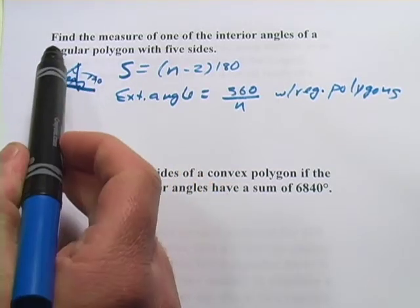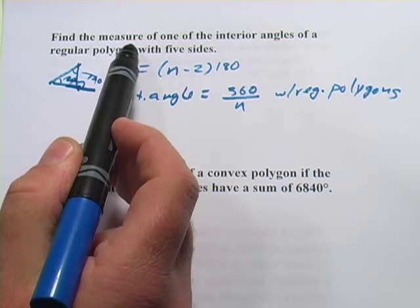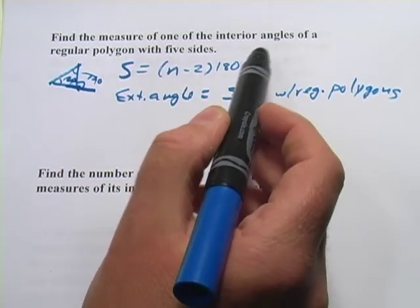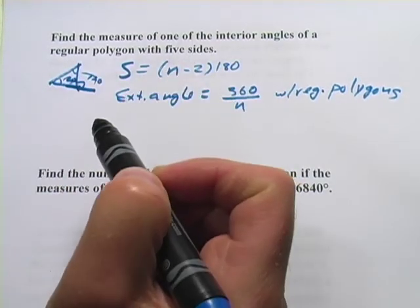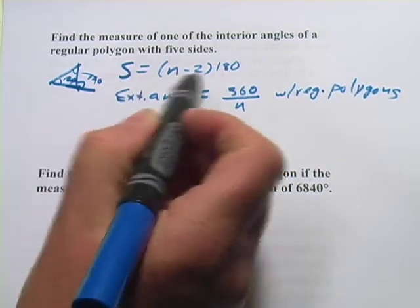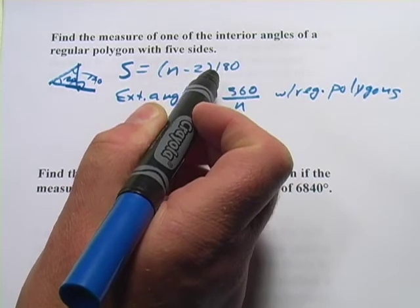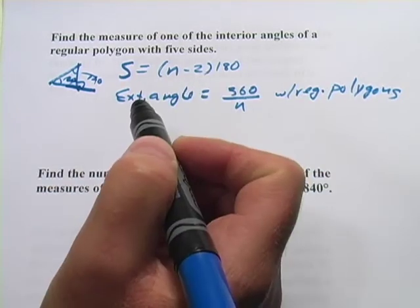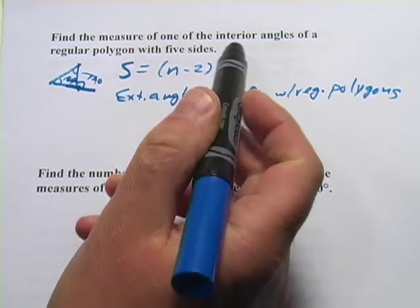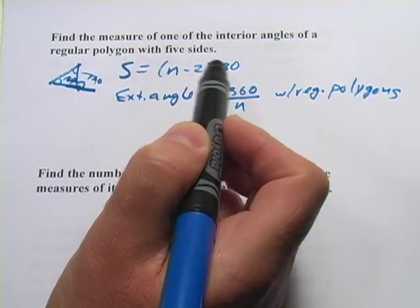Let's go ahead and try solving them. This first one says, find the measure of one of the interior angles of a regular polygon with five sides. Well, I've got a formula here for the sum of all of the interior angles. And I'm going to use that and then just divide by the number of angles to get one of those angles. It's a regular polygon, so they're all going to be the same.